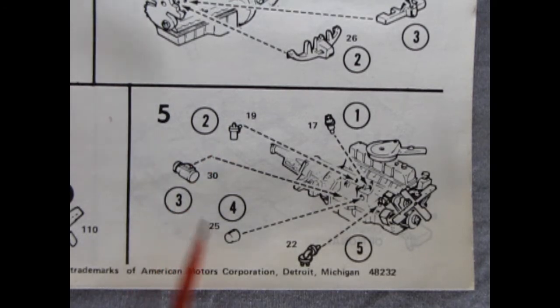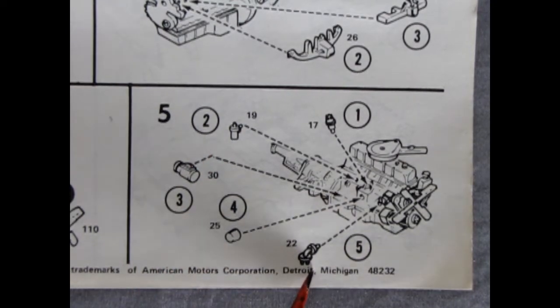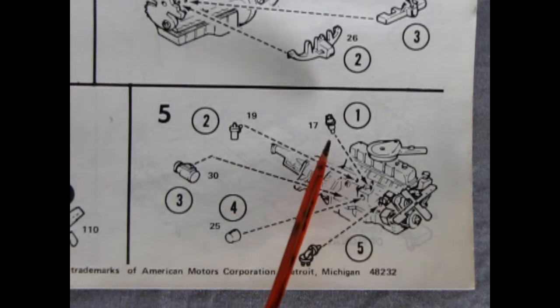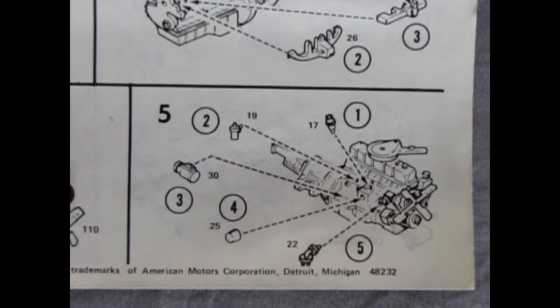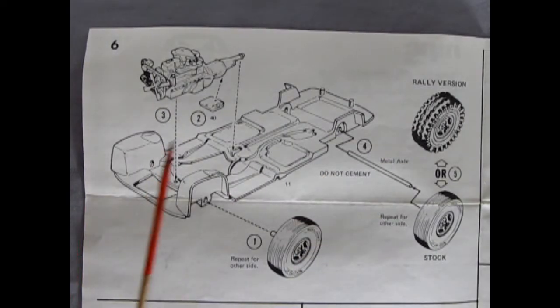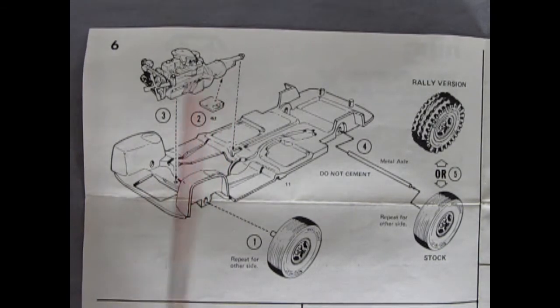Next up we have the coil, the starter, the oil filter, the fuel pump and a distributor all dropping into place, and then when you thought it was all over there's actually a transmission pan that goes up underneath on our transmission.